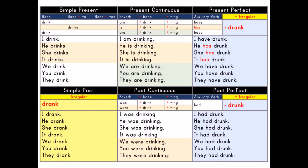Past perfect. Auxiliary verb plus irregular. Auxiliary verb: had. Irregular: drunk. I had drunk. He had drunk. She had drunk. It had drunk. We had drunk. You had drunk. They had drunk.